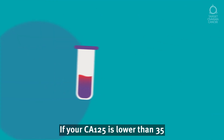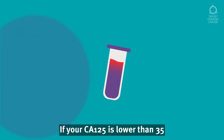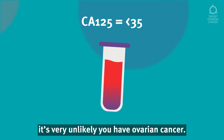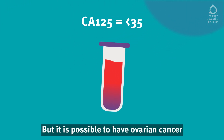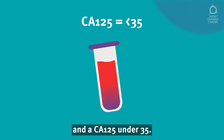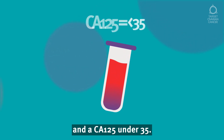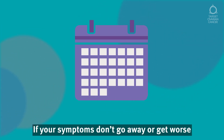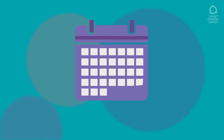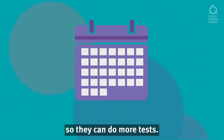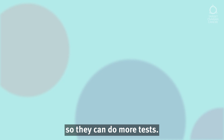If your CA125 is lower than 35, it's very unlikely you have ovarian cancer. But it is possible to have ovarian cancer and a CA125 under 35. If your symptoms don't go away or get worse, go back to your GP within one month so they can do more tests.